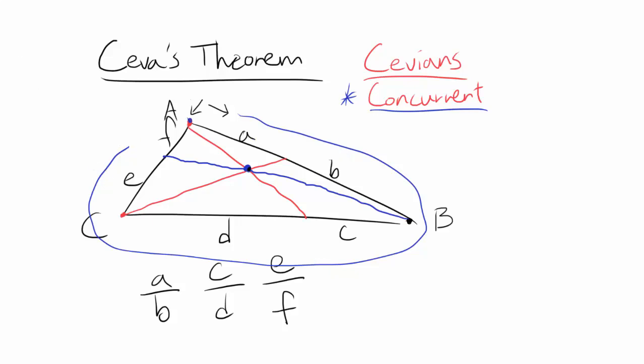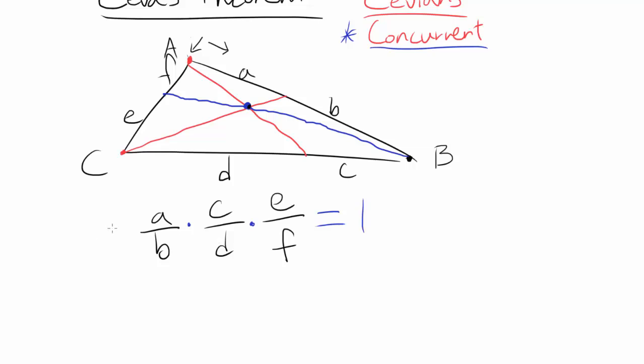And at the end, you are going to multiply all of them together. And if this thing comes out to be one, then you know cevians are concurrent.